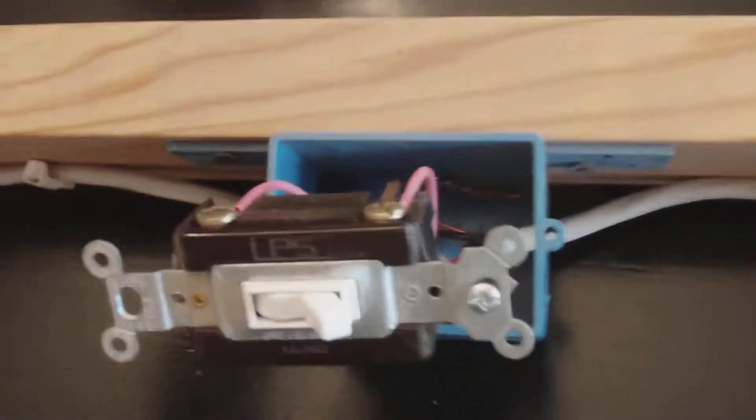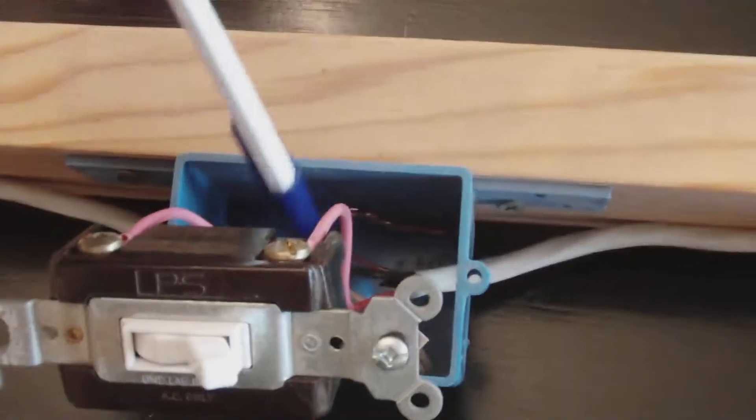You simply connect your two reds on one side, then you connect the two black wires on the other side in your traveler. Connect your whites together and stick them back in the box.